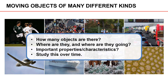In common to all different applications of multiple object tracking is that we have to determine how many objects there are. We have to understand where each object is, where it is going, and any other properties or characteristics that we might be interested in. Lastly, an important aspect of multiple object tracking is that we want to study this over time.